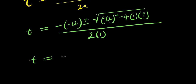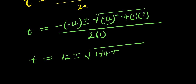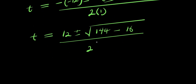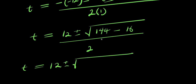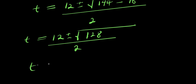So from here, t equals 12 plus or minus square root of negative 12 squared — which is 144 — minus 4 times 1 times 4, which is 16. So 144 minus 16 gives 128, divided by 2. We can express 128 as 64 times 2, divided by 2.